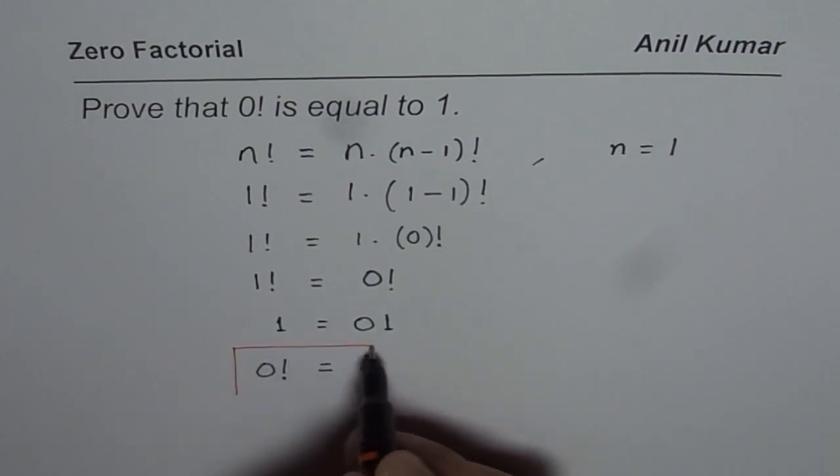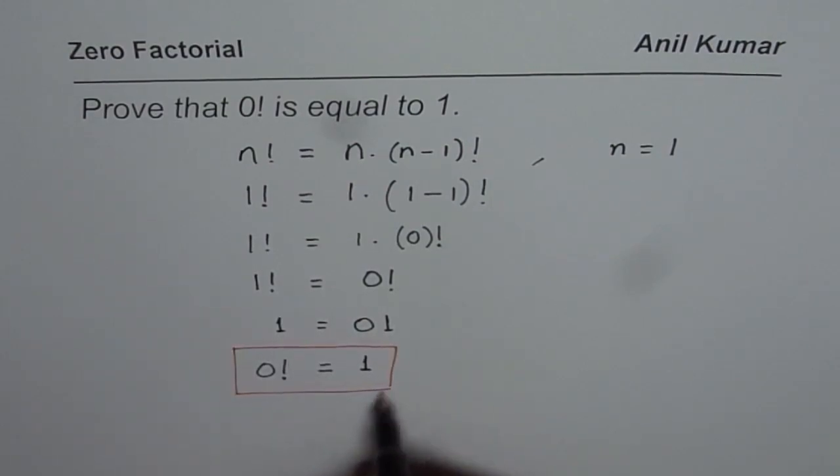So, this is a very simple and straightforward proof for 0 factorial equals 1 factorial or 1. I hope that helps. Thank you.